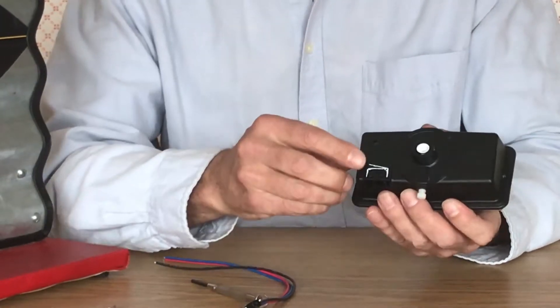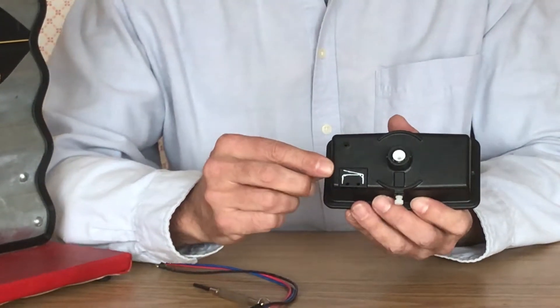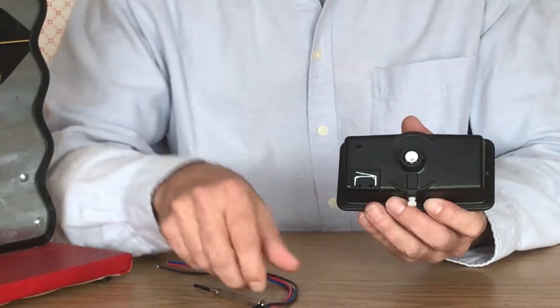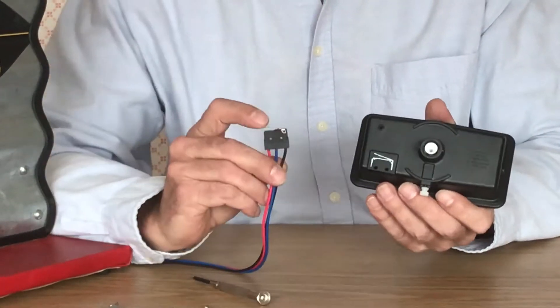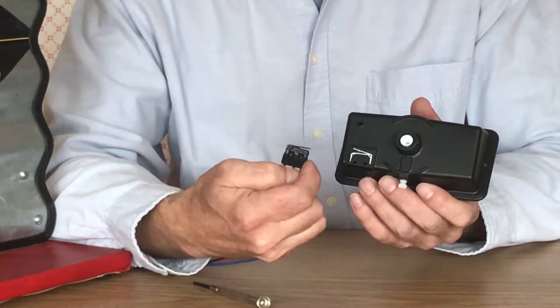Notice there is a diagram molded onto the pocket showing the correct orientation of the switch. It will not work if it is mounted backwards.